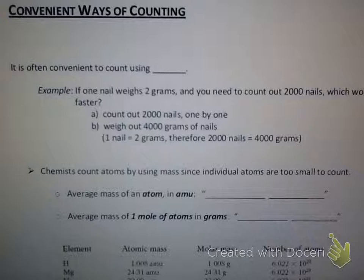How long would it take you to count to 6.022 times 10 to the 23rd? That would take a long time — it's not a very convenient way to count. And if we think about what we usually count when we use Avogadro's number, it's not convenient at all. Have you ever seen an atom? Have you ever seen a molecule? When we count in chemistry we cannot literally go one, two, three. So how do chemists count? Chemists often count using a convenient method called counting by mass.